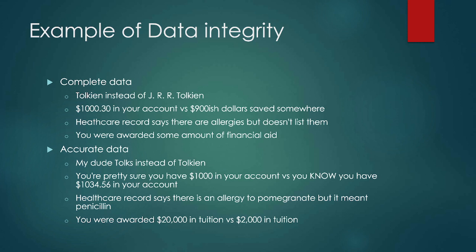If you have to have a careful budget, those extra $34 make a difference. Another accuracy issue: a healthcare record that says there's an allergy and marks it as pomegranate when they meant penicillin — those are not the same thing, and having an incorrect allergy in a record is a huge problem for a patient. Similarly, for financial aid: the difference of a single zero — $2,000 in tuition versus $20,000 in tuition — is a single zero, and that makes a very big difference.